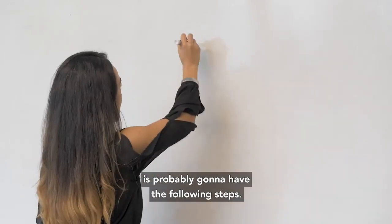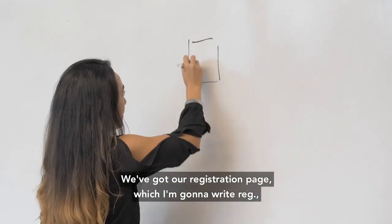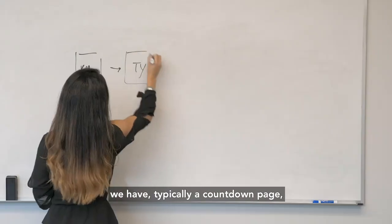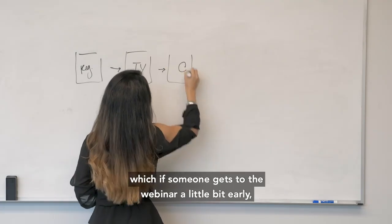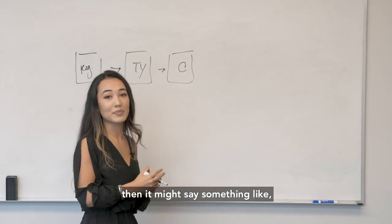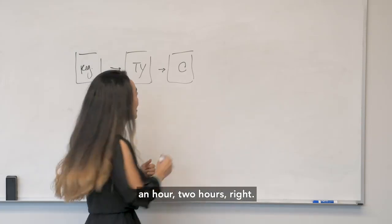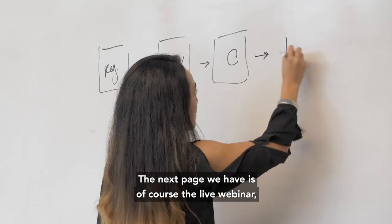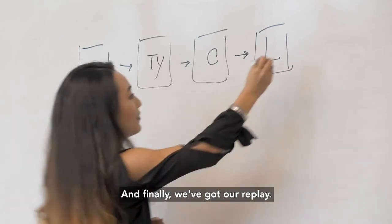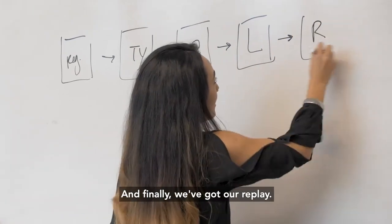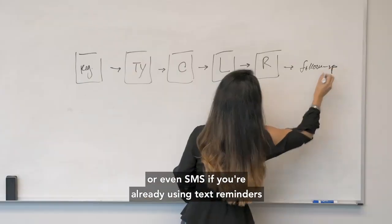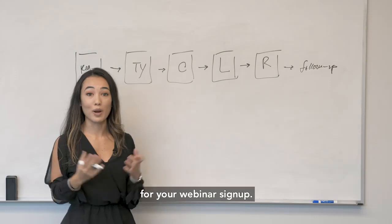So any given webinar is probably going to have the following steps. We've got our registration page, which I'm going to write reg. We've got our thank you page. We have typically a countdown page, which if someone gets the webinar a little bit early or maybe they click on their join link right from the thank you page, then it might say hey, your webinar is starting in an hour, two hours. The next page we have is the live webinar. And this is applicable for an evergreen webinar or live. And finally, we've got our replay. After that, typically you're going to have some sort of follow-up sequence via email or even SMS if you're already using text reminders for your webinar signup.